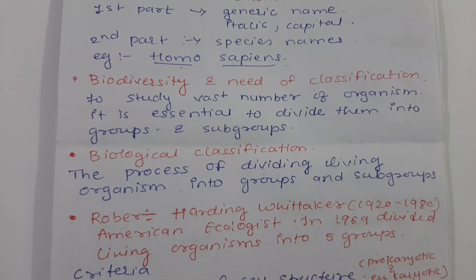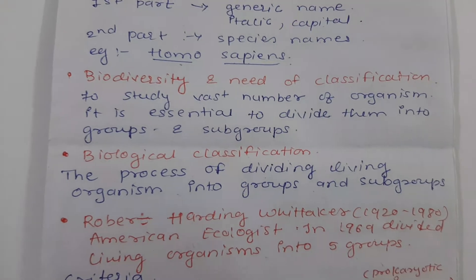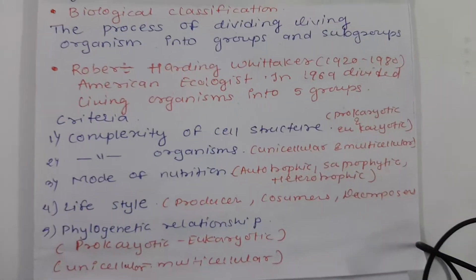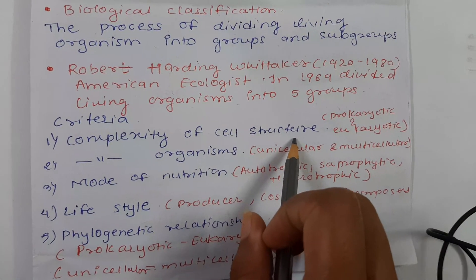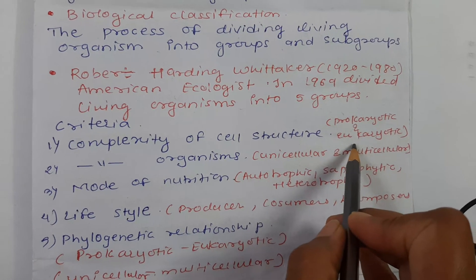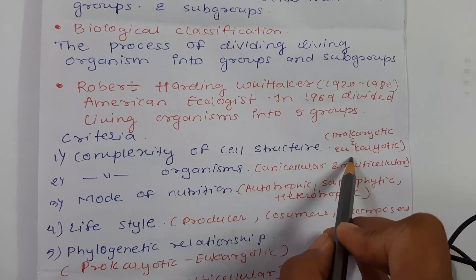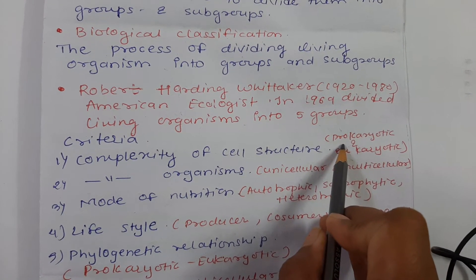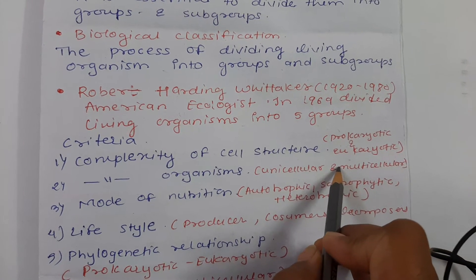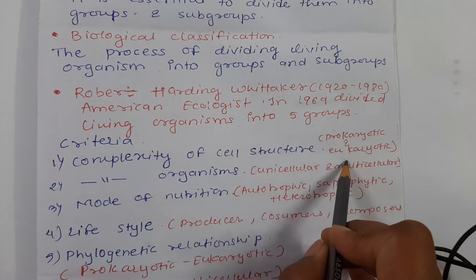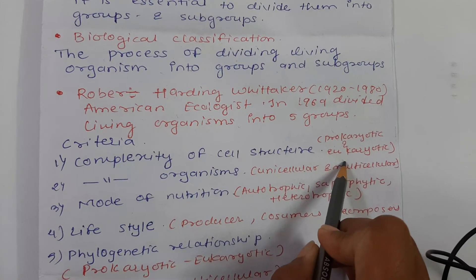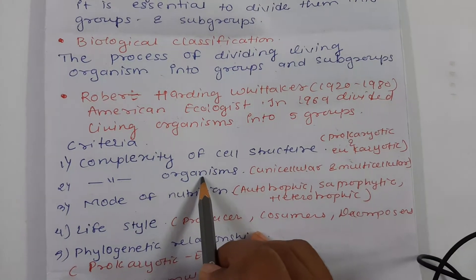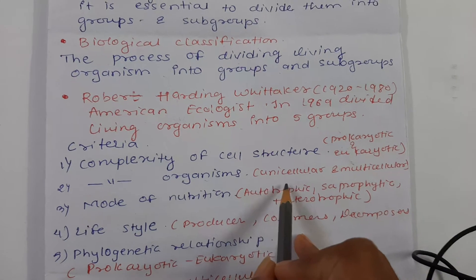To divide organisms into five groups, Whittaker followed certain criteria. The first criterion was the complexity of cell structure — that is, whether the organism is prokaryotic or eukaryotic. Prokaryotic organisms lack a nuclear membrane around them, while eukaryotic organisms have a cell wall and a nuclear membrane.